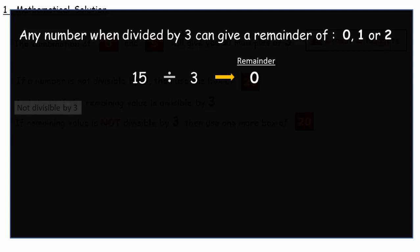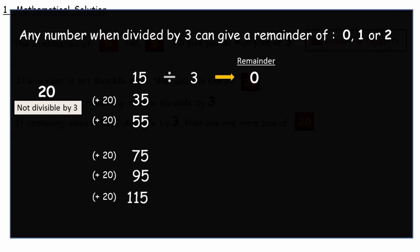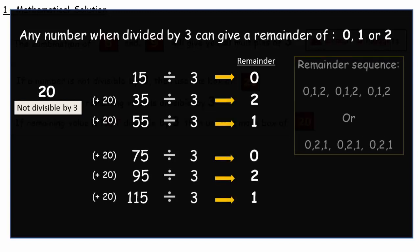Now if you take any number which is not divisible by 3 and add it to 15 repeatedly. And divide the addition result by 3. You will keep getting the remainders in a continuous repeated sequence of 0, 1, 2 or 0, 2, 1.